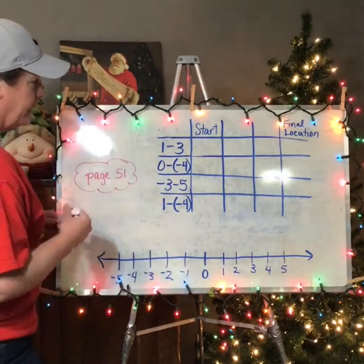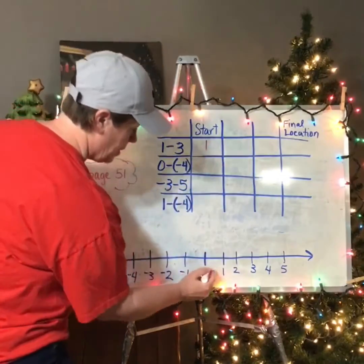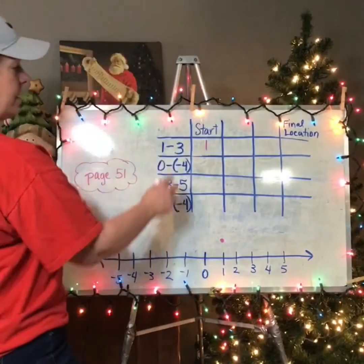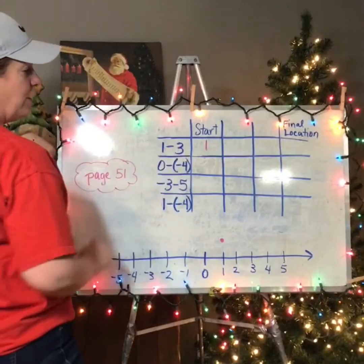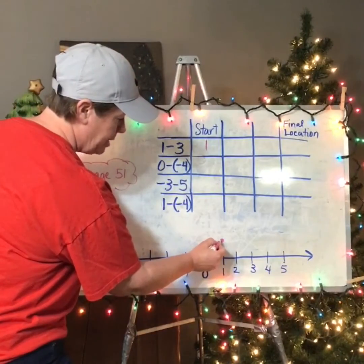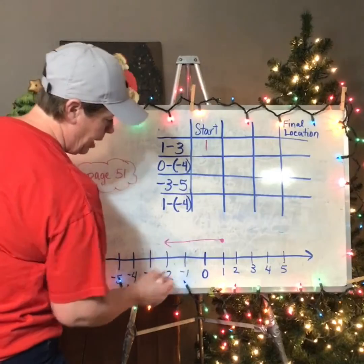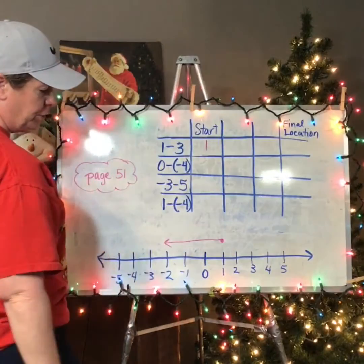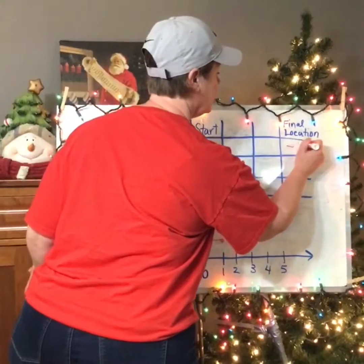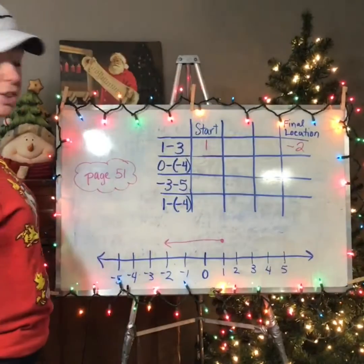On our number line, I'm going to start at one. Then if I take away three, I'm going to go back three spots: one, two, three. I'm going to end up here at negative two. So 1 minus 3, final location is negative two, which is the answer.